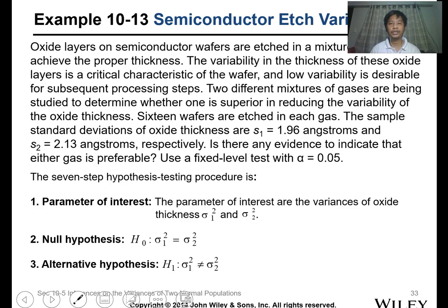This is an example of the statistical test for variance analysis. Oxide layers on semiconductor wafers are etched in a mixture of gases to achieve proper thickness. The variability in oxide layer thickness is a critical characteristic, and low variability is desirable for subsequent processing steps. Two different mixtures of gases are being studied to determine whether one is superior in reducing variability. Sixteen wafers are etched in each gas. The sample standard deviations of oxide thickness are s1 equals 1.96 angstroms and s2 equals 2.13 angstroms. Is there any evidence to indicate that either gas is preferable? Use alpha equal to 0.05.